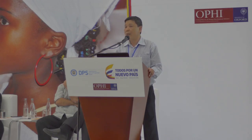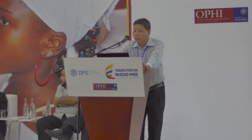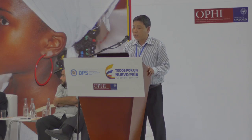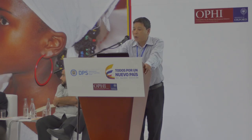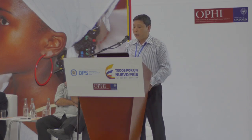Vietnam uses a combination of the income poverty line and the multidimensional poverty line to identify poor households. A poor household is one whose average monthly income per capita is equal to or lower than the poverty income line, and which also suffers deprivation in at least one-third of the total weighted indicators.